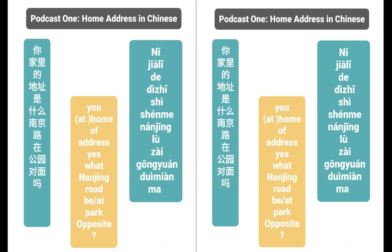And the answer was 我家里的地址. So: 你家里的地址是什么？ 我家里的地址是... 南京路. 路 means 'street,' fourth tone. And 南京路 is perhaps the most famous street right here in Shanghai — it's like Shanghai's Fifth Avenue.